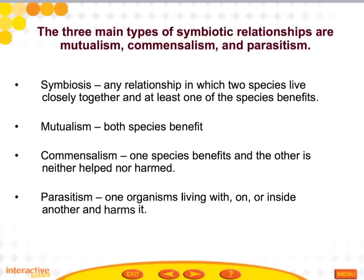The last topic is symbiosis. The three main types of symbiotic relationships are mutualism, commensalism, and parasitism. Symbiosis is any relationship in which two species live closely together and at least one benefits. In mutualism, both species benefit. In commensalism, one species benefits and the other is neither helped nor harmed. In parasitism, one organism living with, on, or inside another harms it.